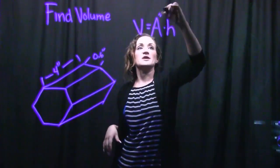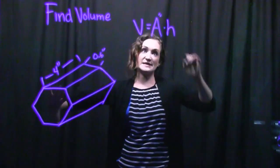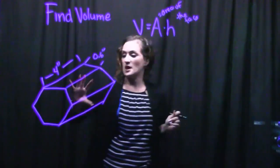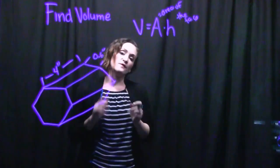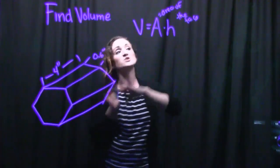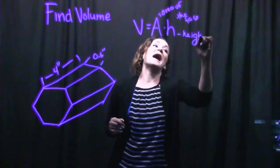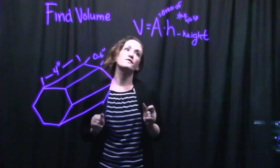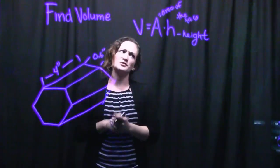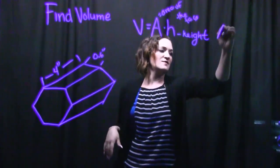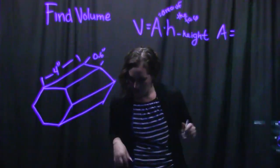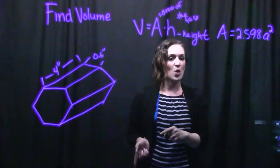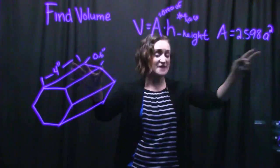Remember that A here represents the area of the face of our shape. So here we have a hexagon, and we first need to figure out how to find the area of it. Once we have that, we multiply it by the height — essentially the length. The area of a hexagon formula looks like this: area equals 2.598 times A squared, where A represents one of the sides of the hexagon.